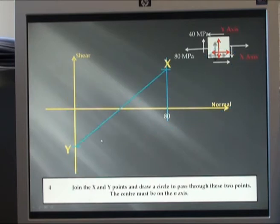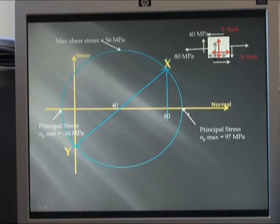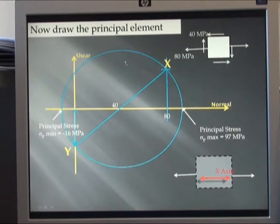I then construct my line between the two, center of the circle, and construct Mohr's Circle for that. My principal stresses: maximum principal stress, minimum principal stress, and maximum shear stress. To draw a principal element,